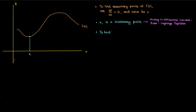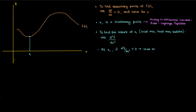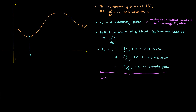Let's get back to f of x. What if I wanted to find the nature of the stationary point x1? What if I wanted to know whether x1 was a local maximum, a local minimum, or a saddle point? Well, I use the second derivative of f. If this second derivative is positive at x1, then x1 is a local minimum. If it's negative then x1 is a local maximum, and if it's zero then x1 is a saddle point.